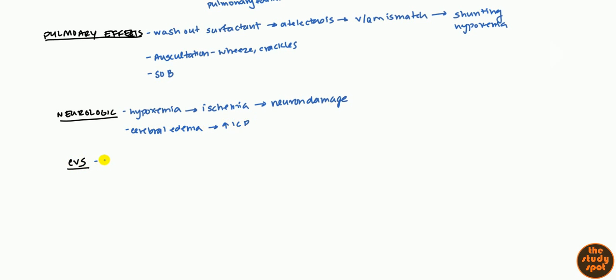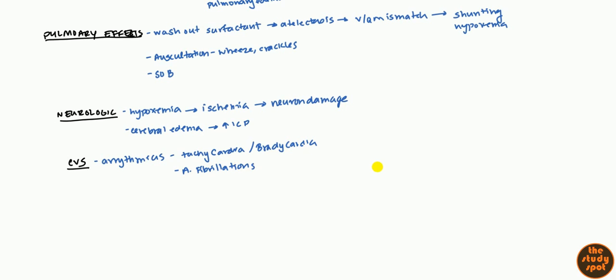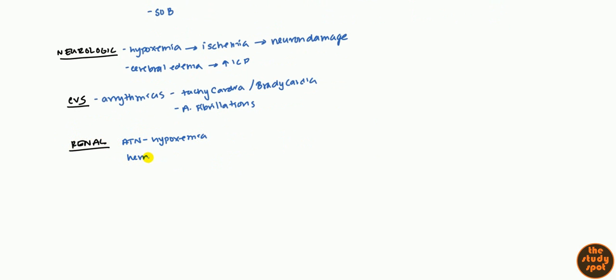On the heart, you do tend to get some arrhythmias. This could be sinus related such as tachycardia, bradycardia. Or it can also affect the atrium and lead to atrial fibrillation. And the final organ, a very important organ, is going to be the renal system. And again, in the renal organ, you can get acute tubular necrosis. And this is, again, due to hypoxemia. And evidence of that would either be hemoglobinuria or even myoglobinuria. So those are the two things you're watching out for in drowning victims. So that is the pathophysiology.